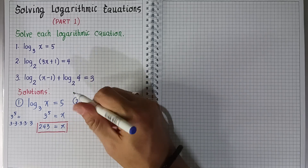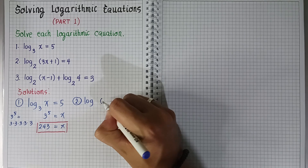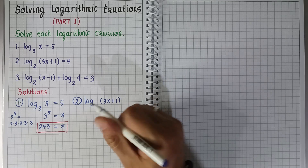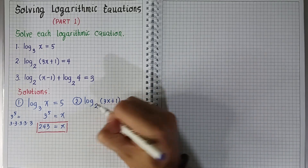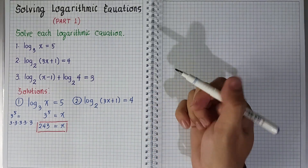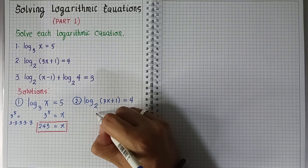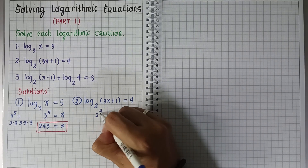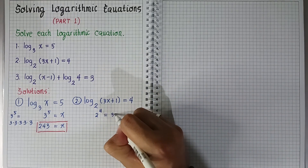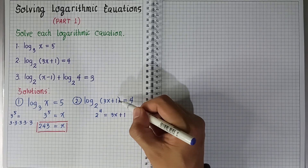For number 2, we have the logarithm of quantity (3x + 1) to the base 2 equals 4. We express this in exponential form: 2 raised to 4 is equal to 3x + 1.